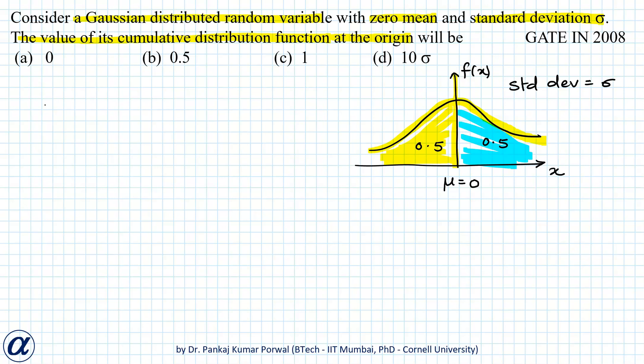The cumulative distribution function for any random variable is given as the integral from minus infinity to x of f(t)dt. So the value of the CDF at the origin, that is 0, equals the integral from minus infinity to 0 of f(t)dt.